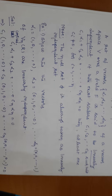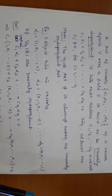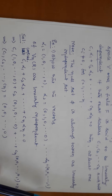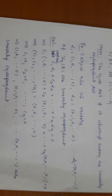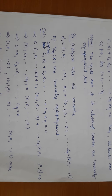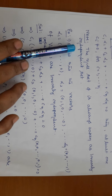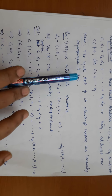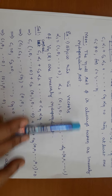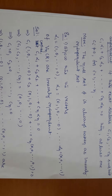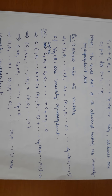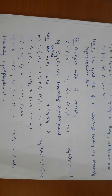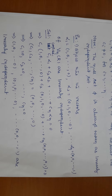I think everyone is clear on the definition of dependent and independent. Before going to take an example, observe this note usually found in standard textbooks: the null set phi is always taken as a linearly independent set. Whenever we get a null set, we consider it as linearly independent.